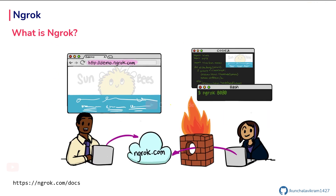This is how ngrok works. You start a secure tunnel on any of your local ports and ngrok makes sure it creates a secure tunnel that works even behind a NAT. Once you get the secure tunnel, ngrok provides you both HTTP and HTTPS URLs so you can access your locally running applications on the internet.